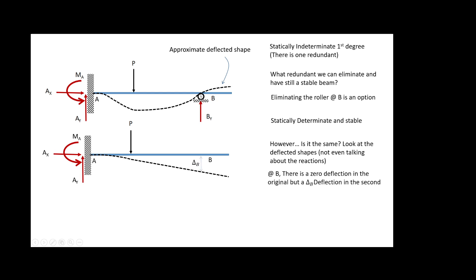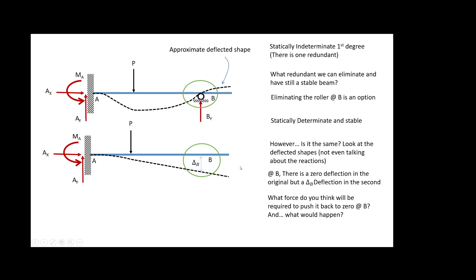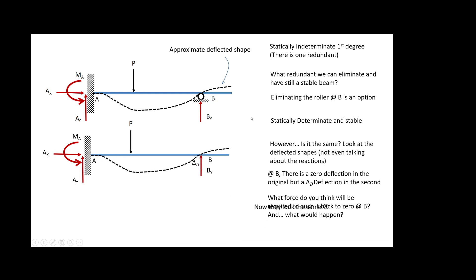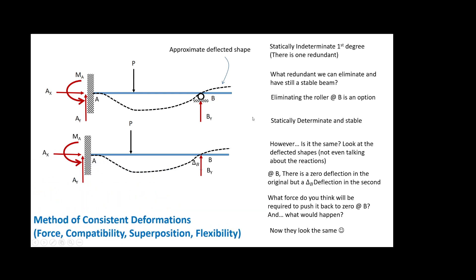However, they are not the same — there is a deflected shape here which is different. Here the deflection is zero, but in the original you have a deflection, and on top of that the reactions are going to be different as well. The structure has to be pushed back with a force equivalent to the reaction By — when you push in that direction, the beam will look exactly like the original.